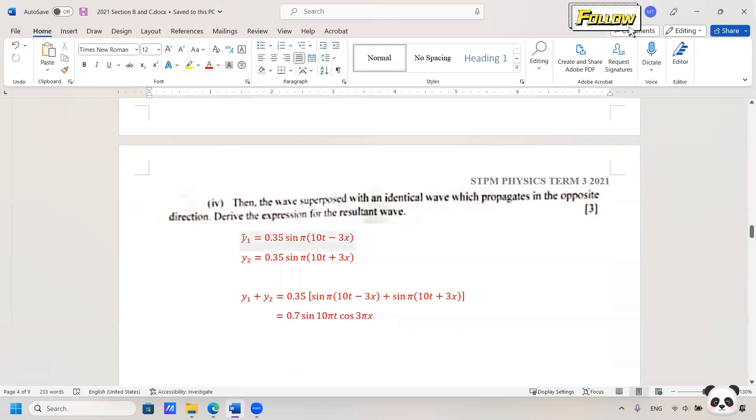We've done the first equation; we need to have another equation where the difference is the direction. Add these two equations and apply the formula given - you should be able to obtain the answer: 0.7 sin 10πt cos 3πx. That's all for this question. Thank you.